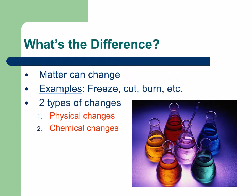Matter can change. You can freeze water and it still ends up being ice. You can cut a carrot and it doesn't stop being a carrot. You can burn a piece of paper and it turns into ash, or burn a tree and a chemical reaction occurs. There are two types of changes for matter: physical changes and chemical changes.